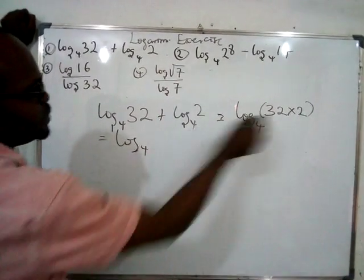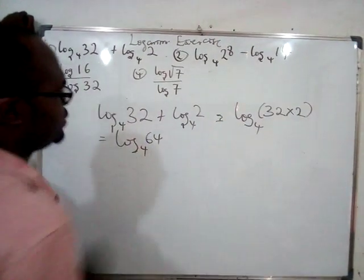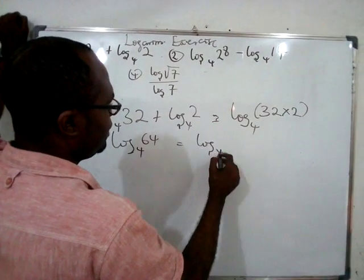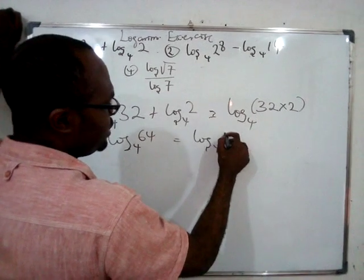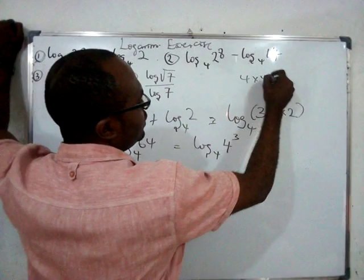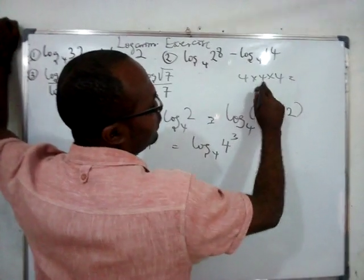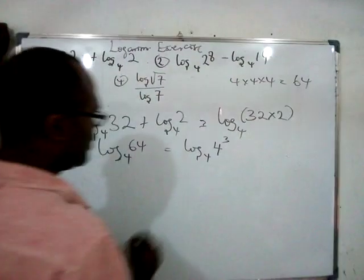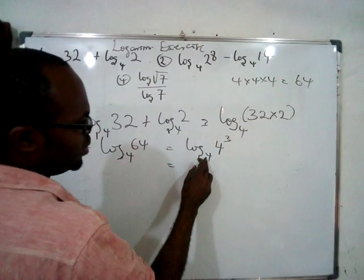32 times 2 is 64. So this is what we have, and this is equivalent to saying log₄64. 64 is the same thing as saying 4³, because if you have 4 times 4 times 4: 4 times 4 is 16, 16 times 4 is 64.